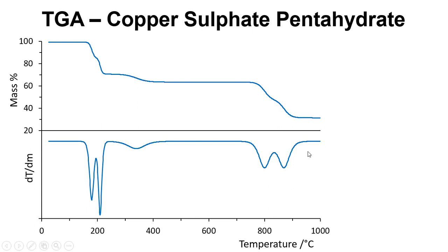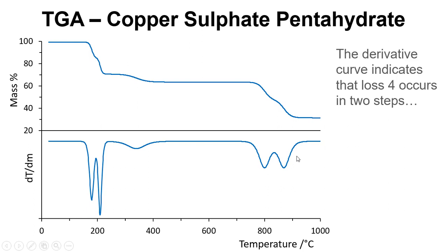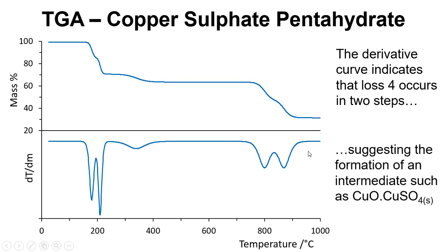If we look at the derivative curve for a moment, we can see that loss 4 occurs in two steps, which suggests the formation of an intermediate, maybe something like CuO·CuSO₄.